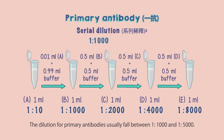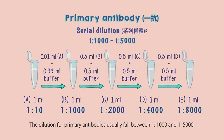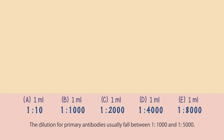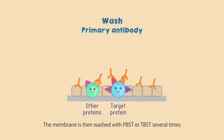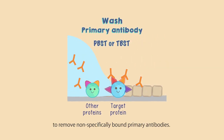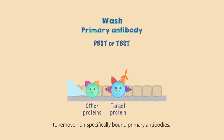The dilutions for primary antibodies usually fall between 1 to 1,000 and 1 to 5,000. The membrane is then washed with PBST or TBST several times to remove non-specifically bound primary antibodies.